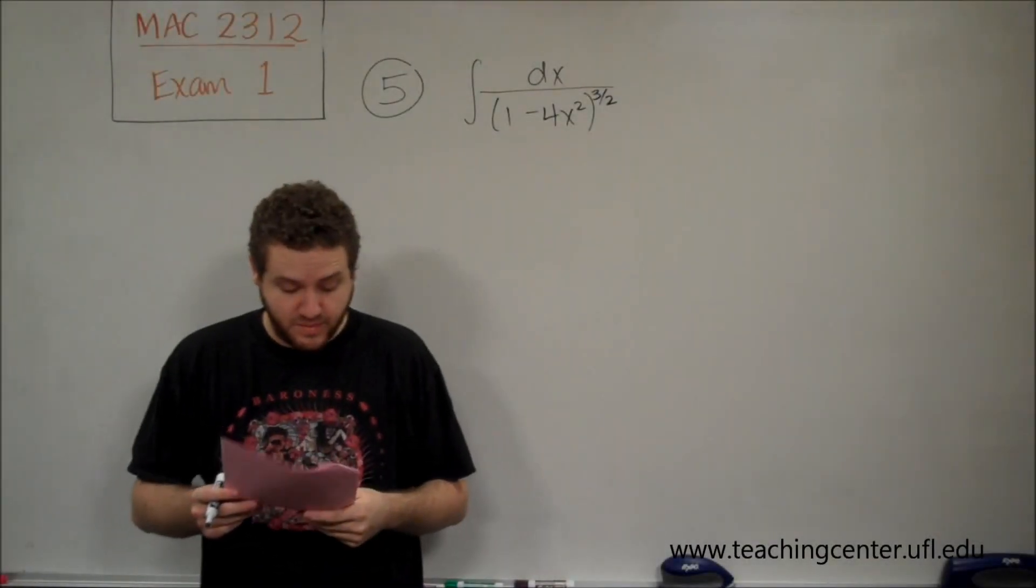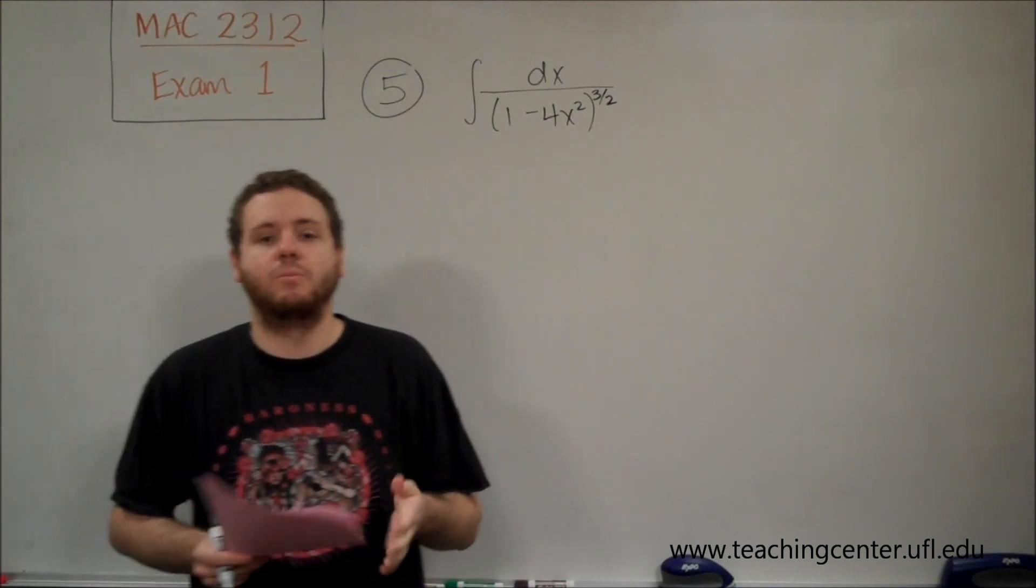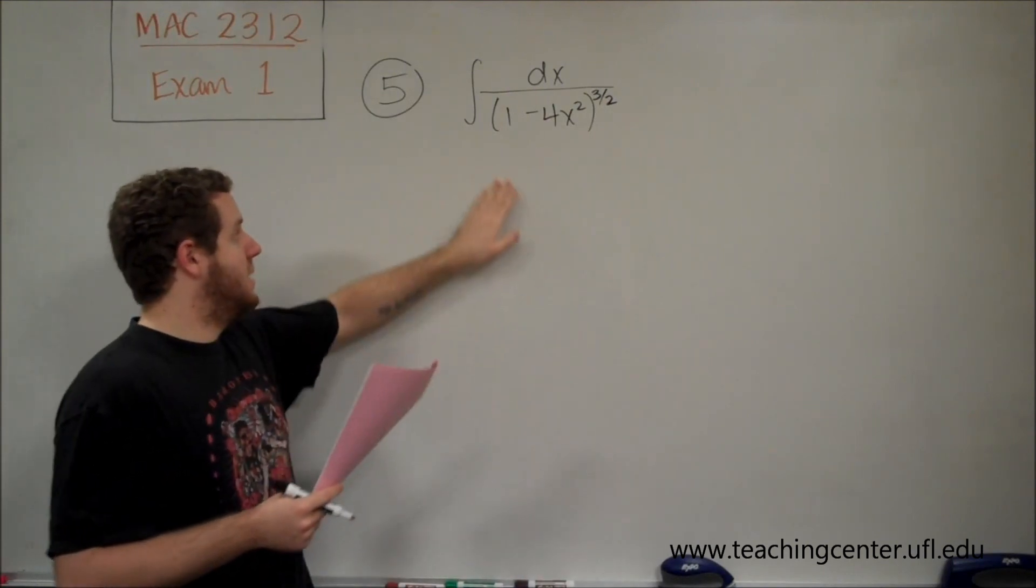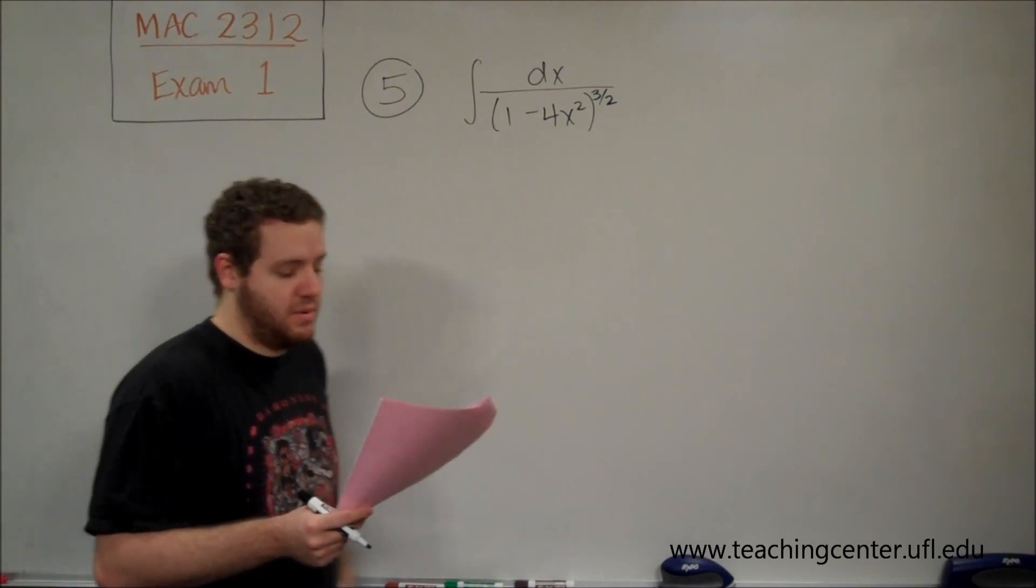All right, and for number five, we have our final part of this section where we're choosing the most helpful trig substitution. We have the integral dx over (1 minus 4x squared) to the 3 halves power.